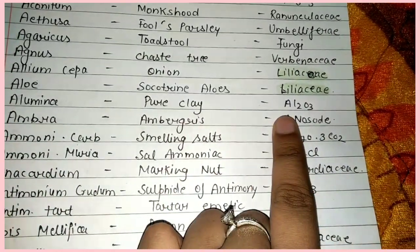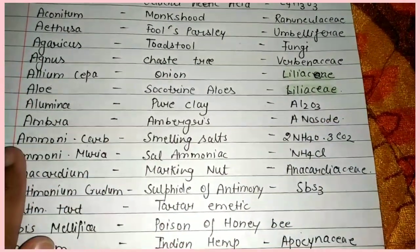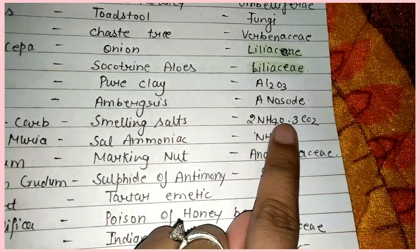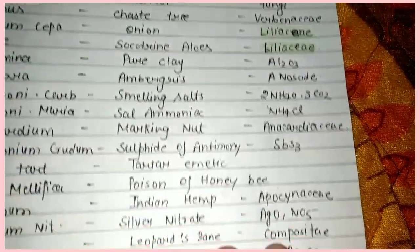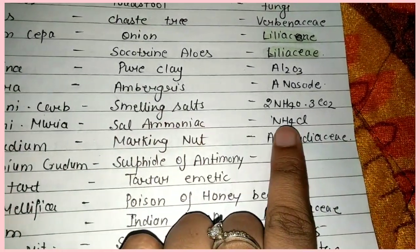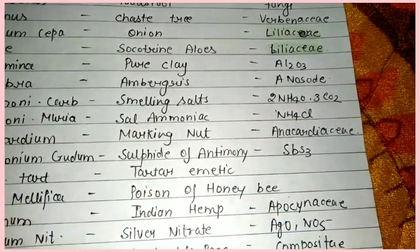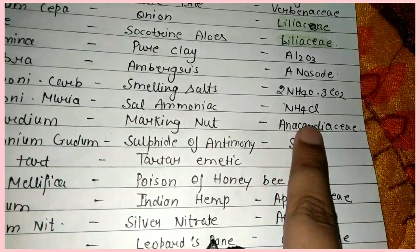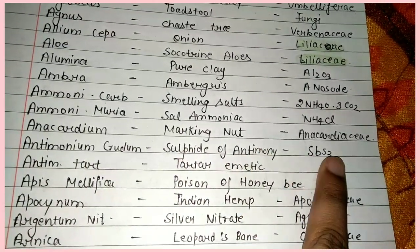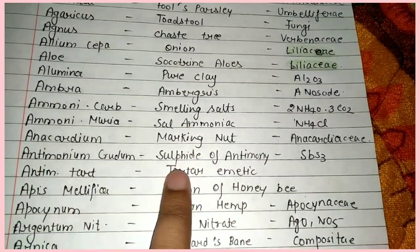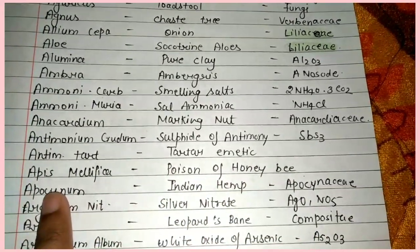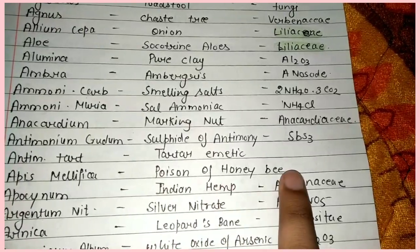Ambra Grisea — Ambergris, this is a nosode. Ammonium Carb — Smelling Salts, formula 2NH4O into 3CO2. Ammonium Muriaticum — Sal Ammoniac, formula NH4Cl. Anacardium — Marking Nut, family Anacardiaceae. Antimonium Crudum — Sulfide of Antimony, Sb2S3. Antimonium Tartaricum — Tartar Emetic. Apis Mellifica — Poison of Honeybee. Apocyanum — Indian Hemp, family Apocynaceae.